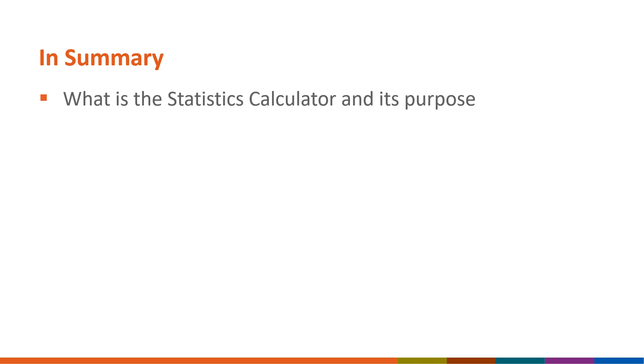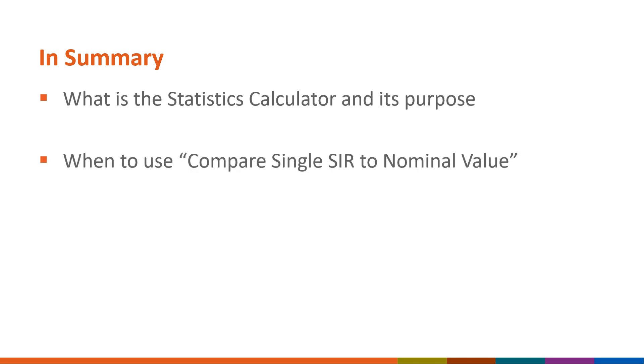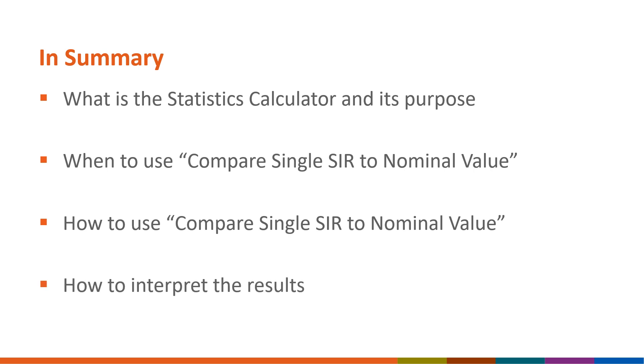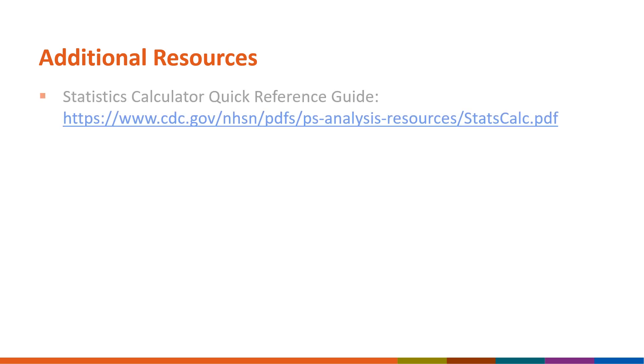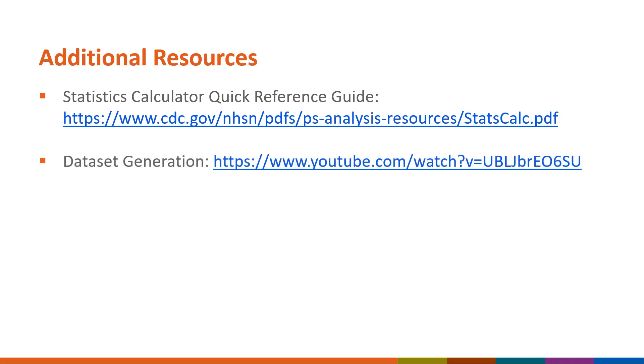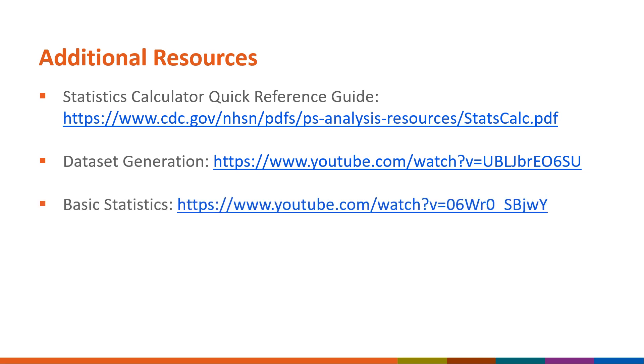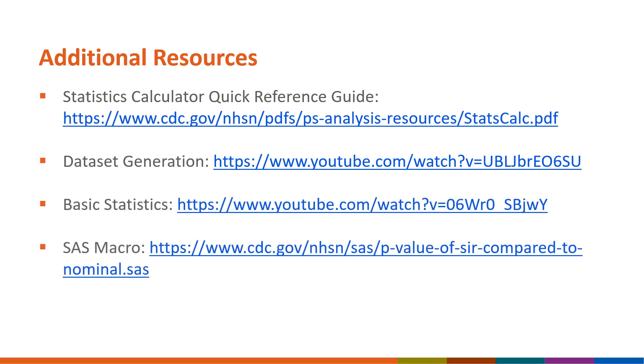To conclude, in this QuickLearn we have learned about the Statistics Calculator and its purpose, learned when you would want to use the Compare Single SIR to Nominal Value option, how to use this option, and how to interpret the results. There are many resources available on the NHSN website for using the Statistics Calculator and understanding basic statistics, including the Statistics Calculator Quick Reference Guide, the Dataset Generation QuickLearn, the Basic Statistics QuickLearn, and the SAS macro file for performing the comparison.